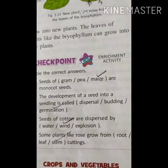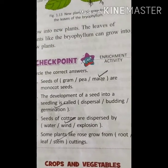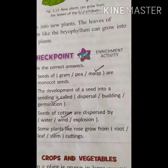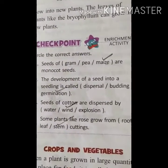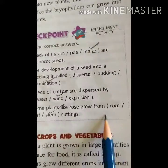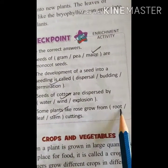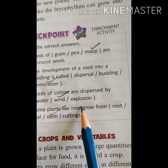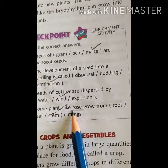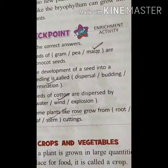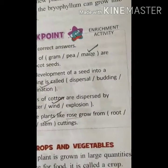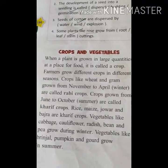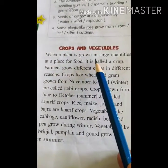Seeds of cotton are dispersed by wind. Examples of wind-dispersed seeds include dandelion, hyptage, and madar. Some plants like rose grow from stem cuttings - rose, hibiscus, and sugarcane are all examples of stem cuttings.